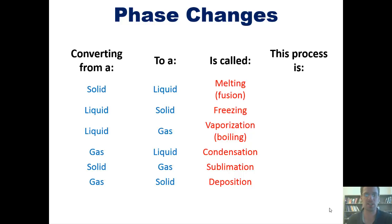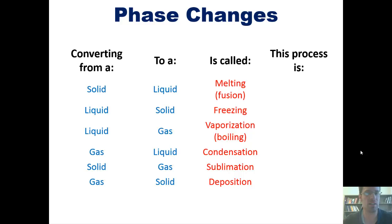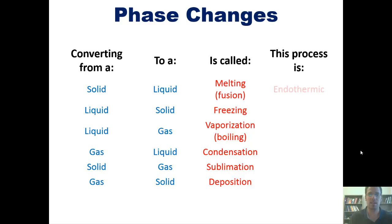Each of these processes either consumes or gives off heat. For example, when you melt ice, converting it from solid water to liquid water—imagine holding ice in your hand and watching it melt. Does it give off heat or consume heat? Well, it feels cold. Why does it feel cold? Because those solid frozen water molecules are sucking heat from your hand, using that heat energy to break themselves apart and convert from a solid to a liquid. Because melting consumes heat, it is endothermic.